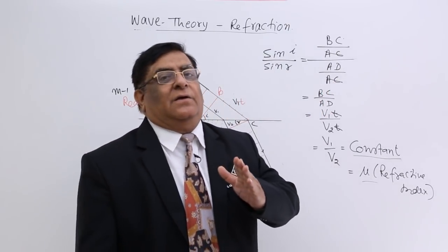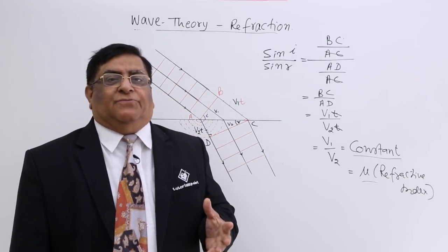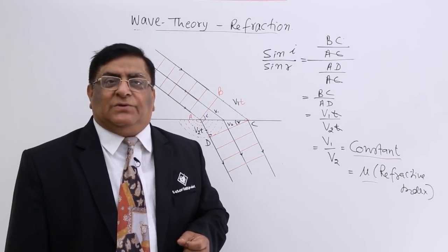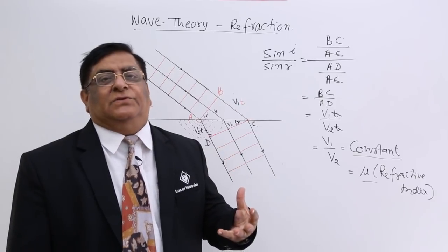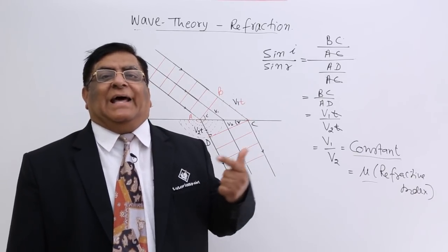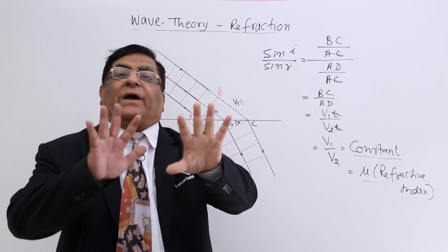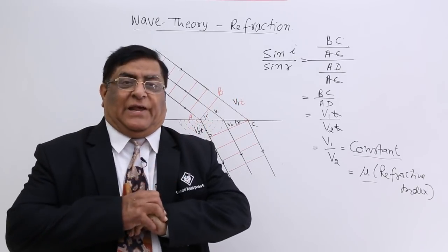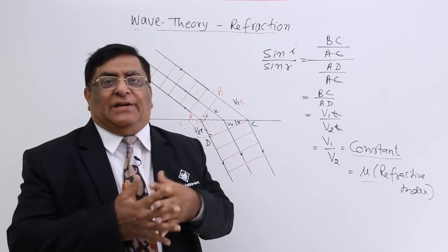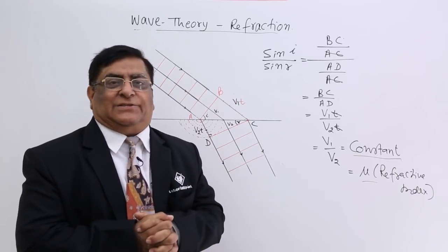Huygens could not demonstrate it experimentally, but his student Young could — and he showed it. At that point it was proved that wave theory is the correct theory and that light behaves as waves. So next we will study the principle of superposition of waves, what coherent waves are, and how darkness is created by the combination of lights. That is very interesting and we will see it in the next lecture. Thank you.